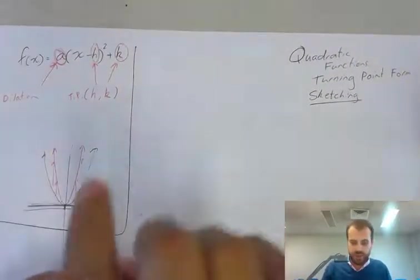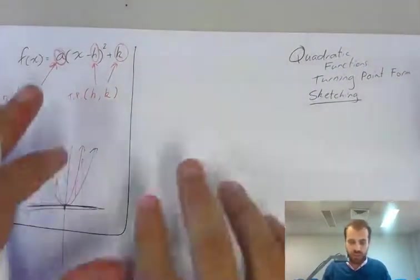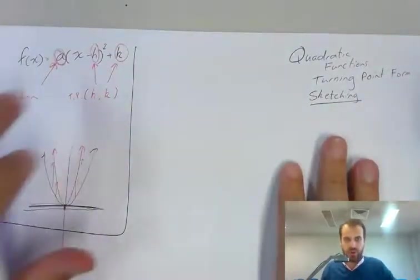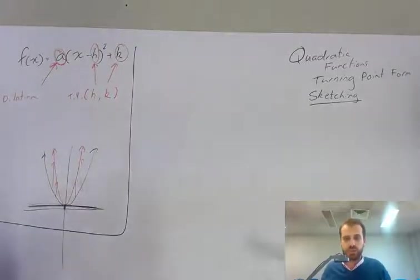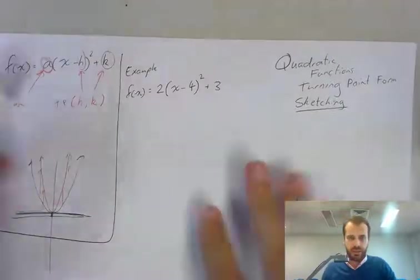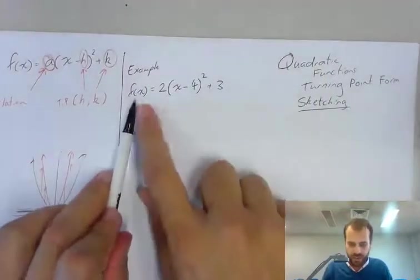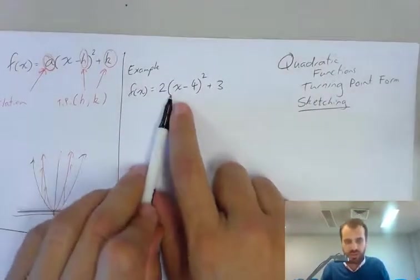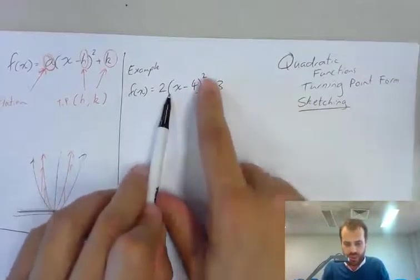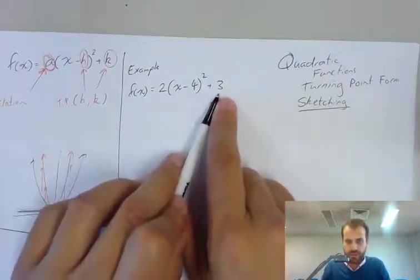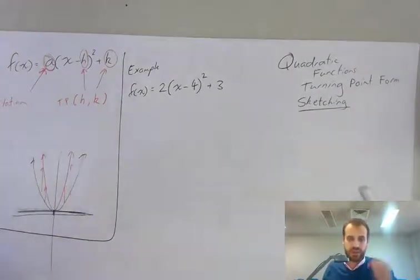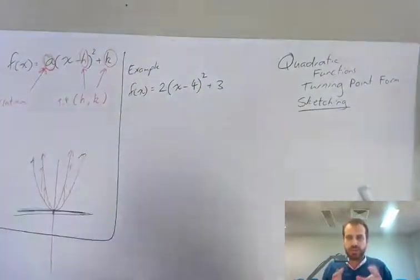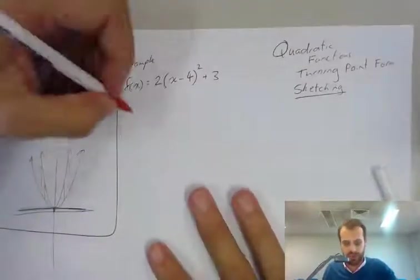The main focus is being able to sketch a quadratic given you know the turning point. So I'm going to run through an example so you can see what I'm talking about here. And we'll come up with a plan for sketching these. So here's a quadratic: f(x) equals 2 times x minus 4 all squared plus 3. We're going to find a few significant points when we sketch this, then join those significant points up. That's pretty much how we roll.